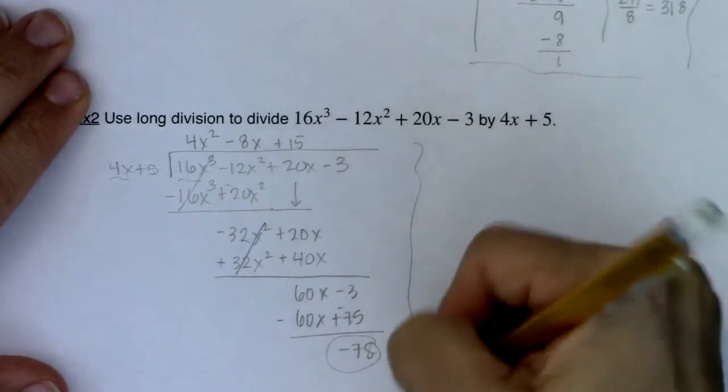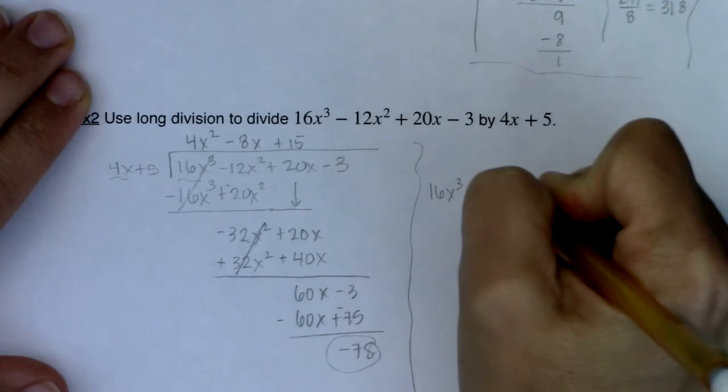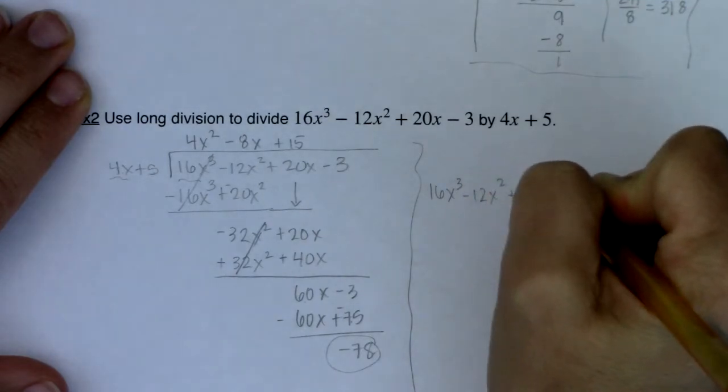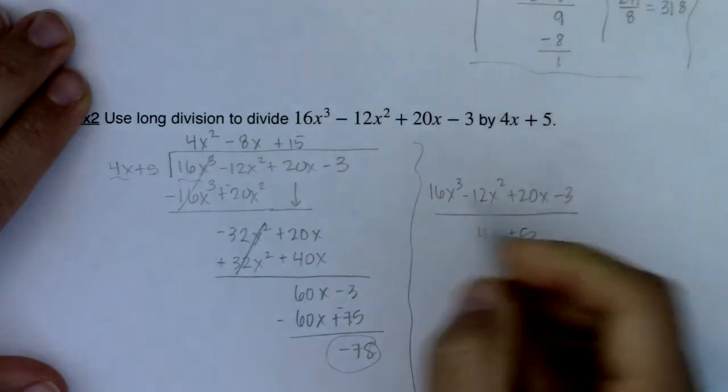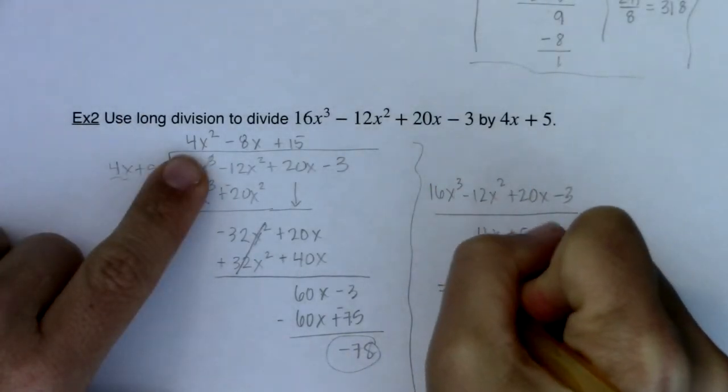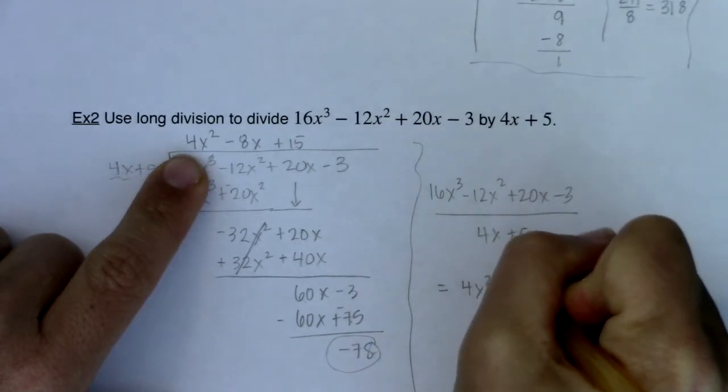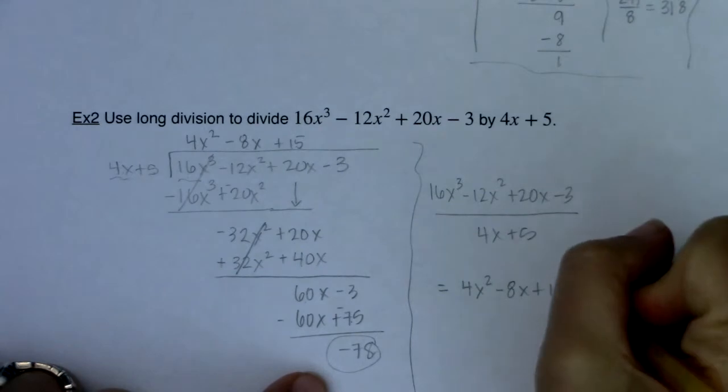If I want to write this up, if I took the ratio of 16x cubed minus 12x squared plus 20x minus 3, the fraction of that polynomial divided by 4x plus 5, I know that to be equal to 4x squared minus 8x plus 15, and then I have this remainder. You do whatever your remainder is in ratio to that divisor.